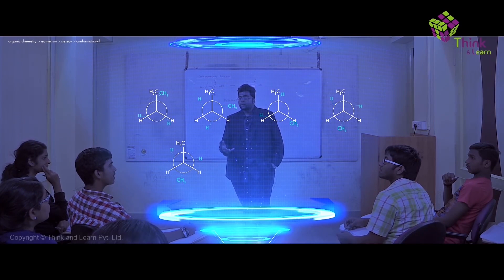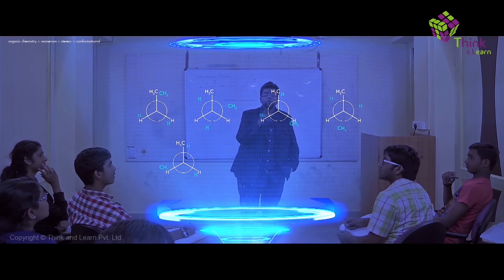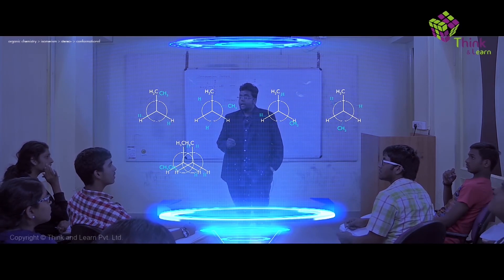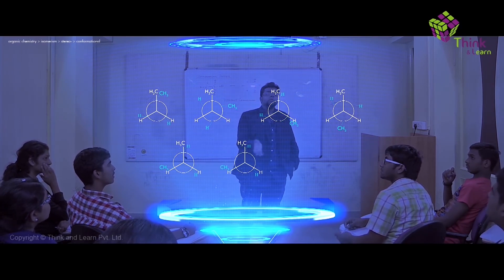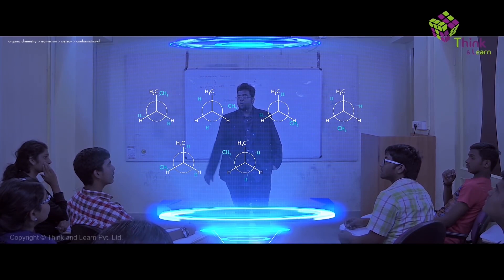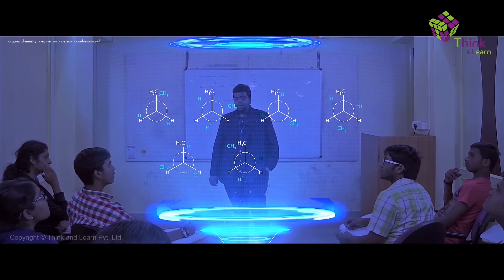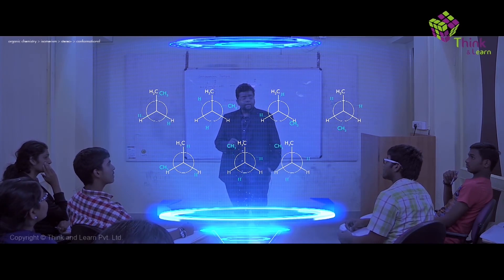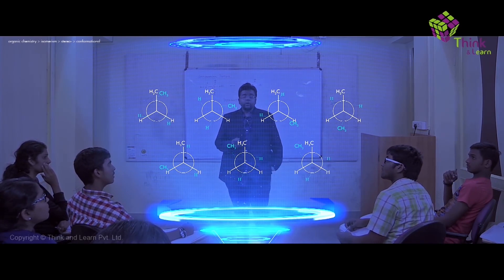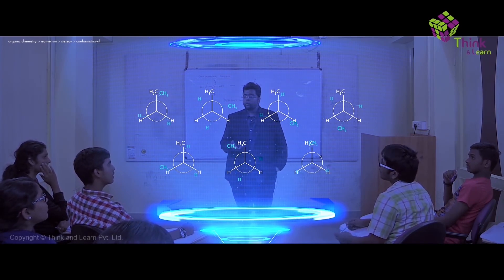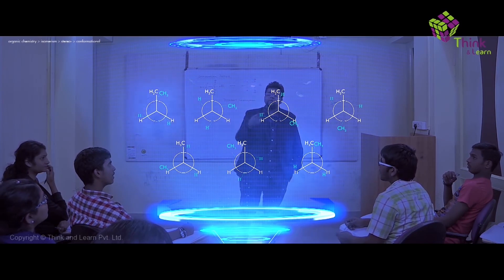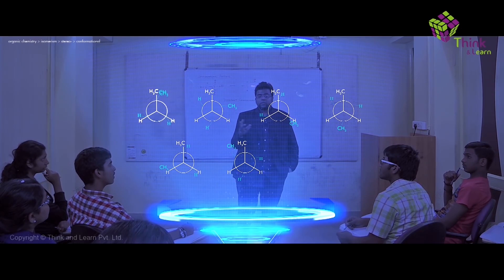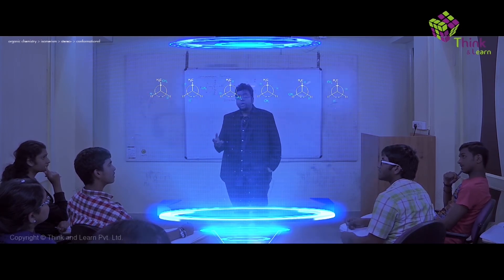Now if I move it by 60 degrees more, you get another gauche conformation — but if you look carefully, it's exactly the opposite of the second one. Then moving 60 more degrees brings us back to the first conformation. So if the dihedral angle is 0 degrees or 360 degrees, the conformation is the same. These are the five different conformations you get for butane.